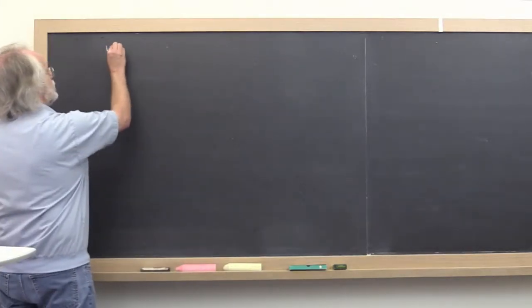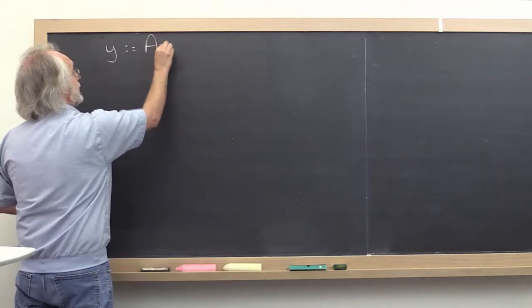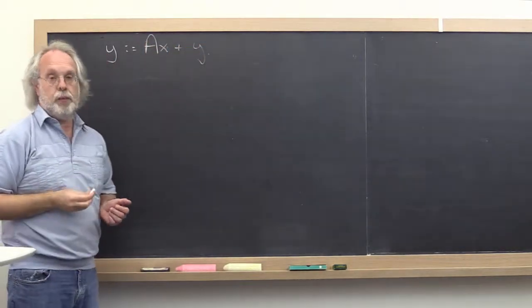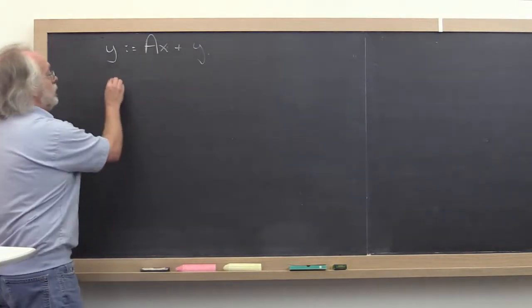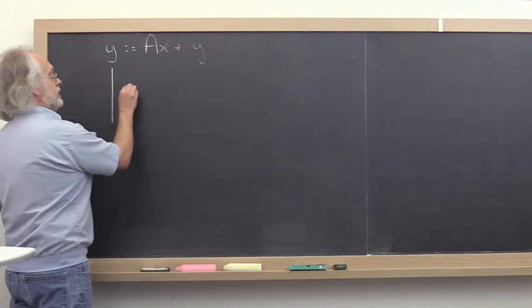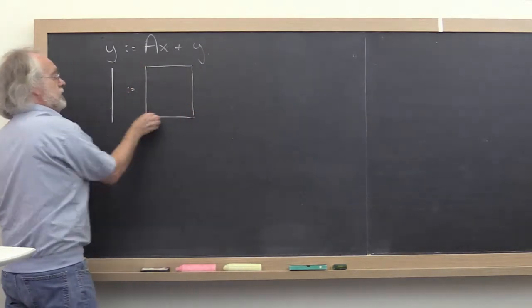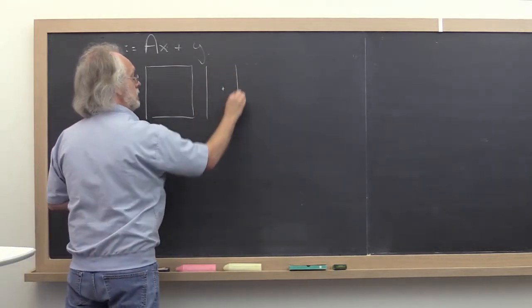Let's focus on the operation where we have Y being updated by AX plus Y. Now, when you were taught how to do matrix-vector multiplication, you were told you're computing a vector and you're multiplying a matrix represented by this box times a vector, adding the result to a vector.